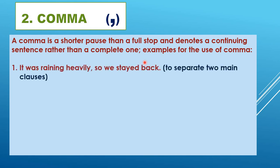Let us see the first example: 'It was raining heavily, so we stayed back.' These are two main clauses — two sentences joined by a conjunction 'so'. You can see there is a conjunction joining two sentences which can stay separate. When doing that, you have to show the separation by putting a comma there.